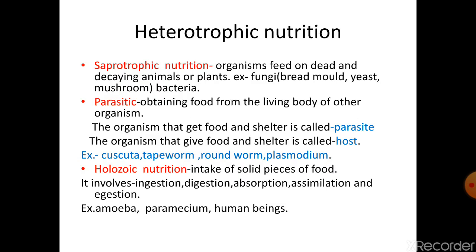Heterotrophic nutrition is itself a huge topic. We will read photosynthesis under autotrophic nutrition. In heterotrophic nutrition, we further classify it into saprophytic nutrition, parasitic nutrition, and holozoic nutrition. Saprophytic nutrition means the organism feeds on dead and decaying organic matter. It is a type of heterotrophic nutrition only. Examples are fungus and mushrooms — they derive their nutrition from dead and decaying organic matter.